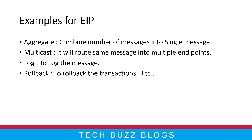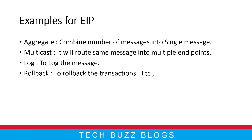Let me give some examples of enterprise integration patterns. There are hundreds of EIP components, but we'll look at four examples. First is Aggregate: it combines a number of messages into a single message. For example, if your use case is running parallelly across two or three threads, once all threads have completed their task, you need to merge the responses and process them. In Apache Camel, you can achieve this easily using the keyword 'aggregate'.